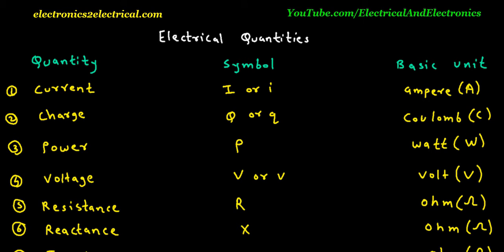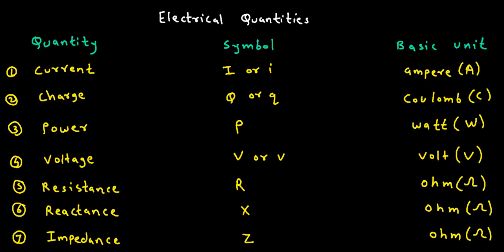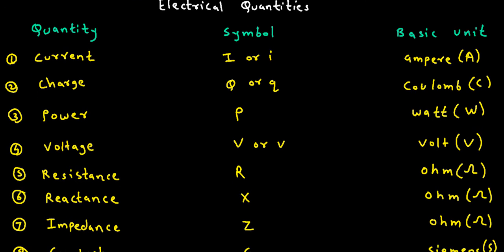Electrical Quantities summary. Quantity: Current. Symbol: capital I. Basic Unit is Ampere, denoted by capital A. Quantity: Charge. Symbol: capital Q or small q. Basic Unit is Coulomb, denoted by capital C. Quantity: Power. Symbol: capital P. Basic Unit is Watt, denoted by capital W.